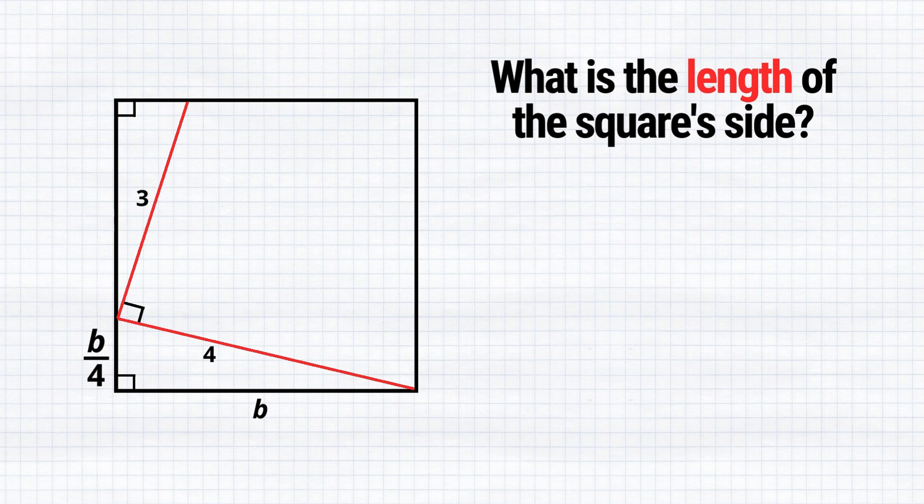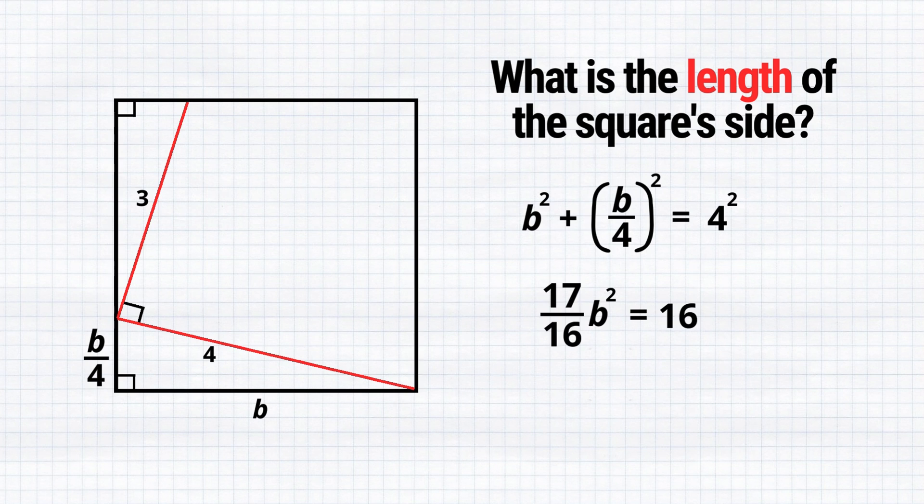Now, it's time for a Pythagoras theorem. B squared plus the quantity (B over 4) squared is equal to 4 squared. This will be 17 over 16 B squared equals 16. And the value of B will be 16 over the square root of 17.